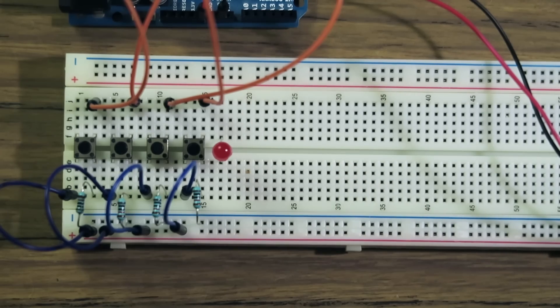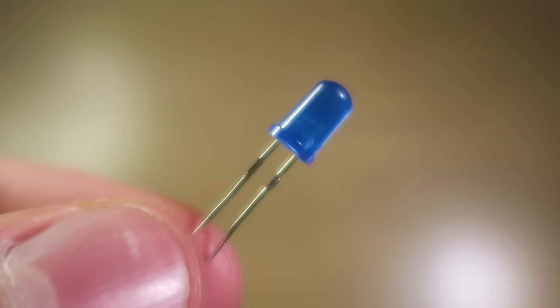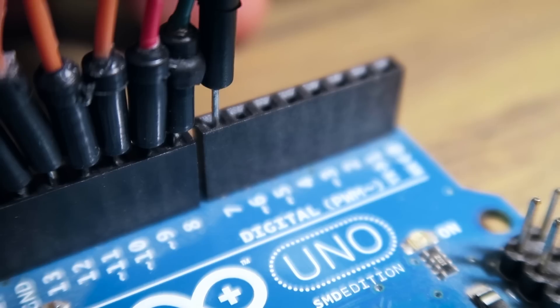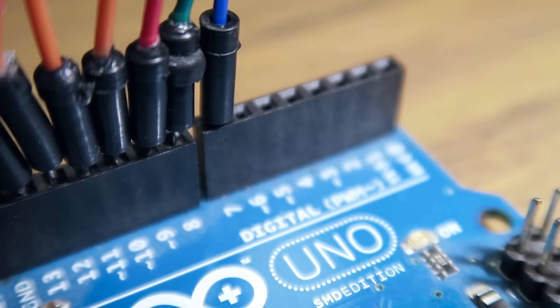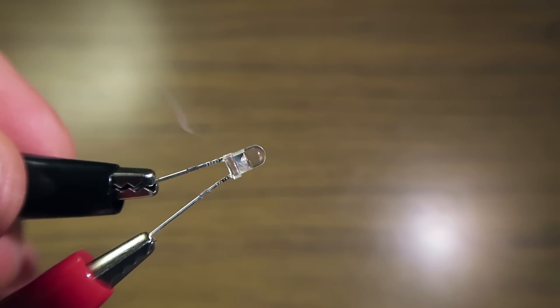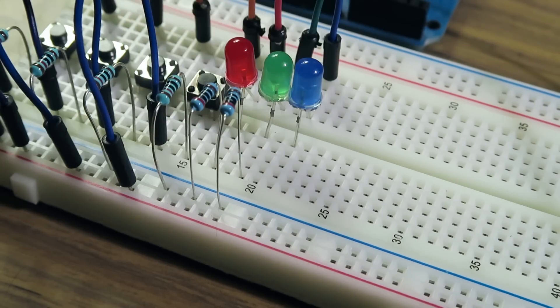I'll use a red LED to show when an incorrect pin is entered and a green LED that will light when successfully unlocked. To indicate when the system is ready for a pin to be entered, I'll use a blue LED. If I connected these LEDs directly to the Arduino, a large amount of current will flow, which will likely damage the Arduino and LED.